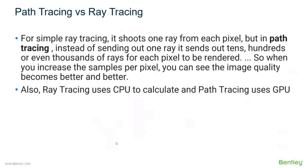Path tracing versus ray tracing — we have two rendering systems available. With simple ray tracing, it shoots out one ray from each pixel. But with path tracing, instead of sending out one ray, it sends out tens, hundreds, even thousands of rays for each pixel being rendered.